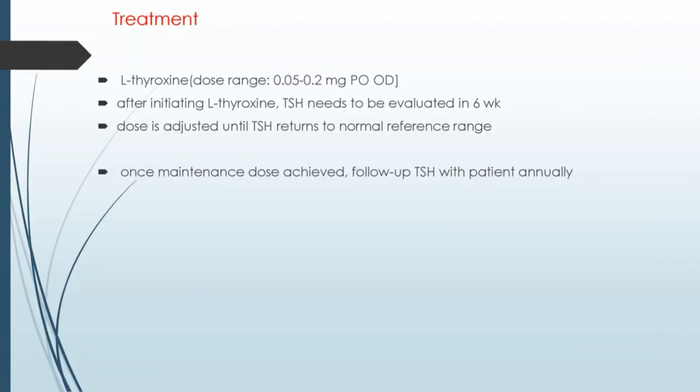Treatment of hypothyroidism is levothyroxine. After initiating levothyroxine, TSH needs to be evaluated at 6 weeks. The dose is adjusted until TSH returns to the normal reference range. Once the maintenance dose is achieved, follow-up TSH with the patient annually.